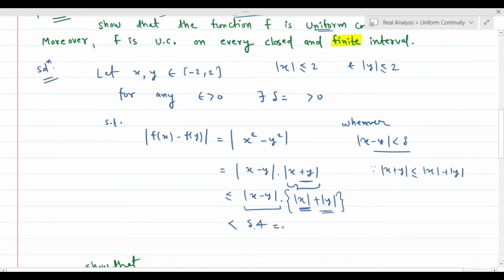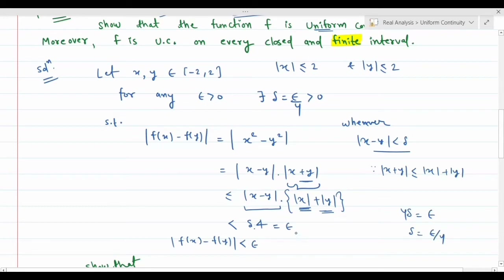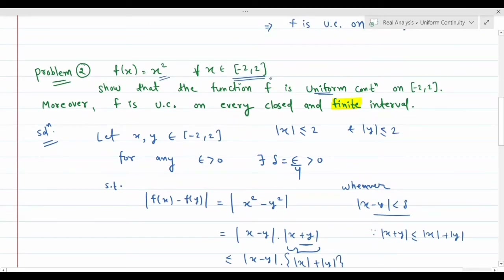We need 4·delta = epsilon, so delta = epsilon/4. For any given epsilon, our delta is epsilon/4. When |x - y| < delta = epsilon/4, we get |f(x) - f(y)| < 4·(epsilon/4) = epsilon. This implies f is uniformly continuous on [-2, 2]. We showed it both ways: using the closed interval plus continuity theorem, and via direct justification with delta = epsilon/4.